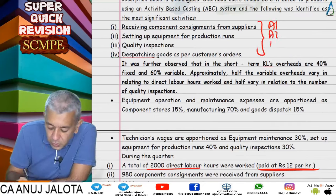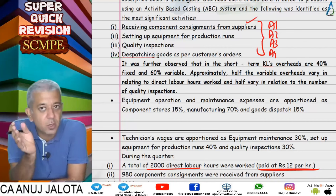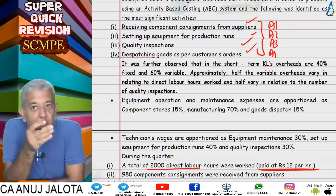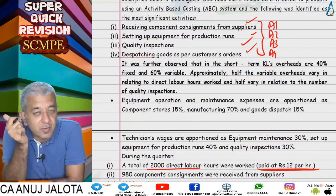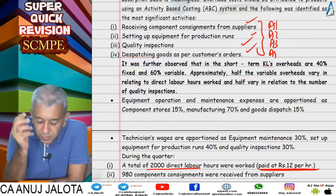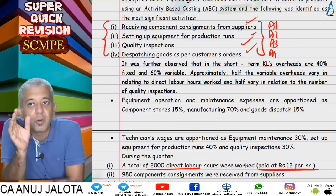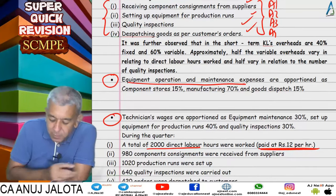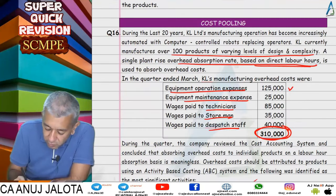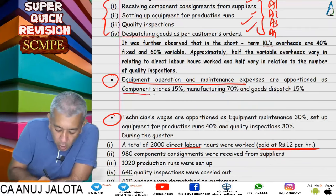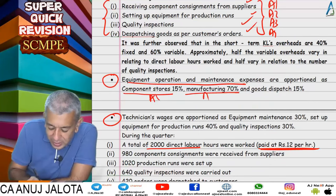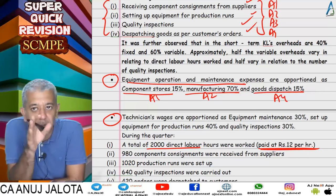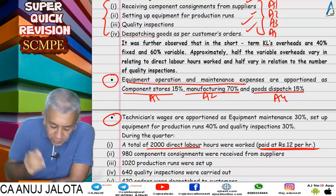Under activity based costing there were four activities: A1 — receiving component consignments from suppliers; A2 — setting up equipment; A3 — inspecting product for quality; A4 — dispatching goods. We need cost for each activity. Equipment operation and maintenance expenses bifurcation was given among component stores (A1), manufacturing/setup (A2), and goods dispatch (A4).